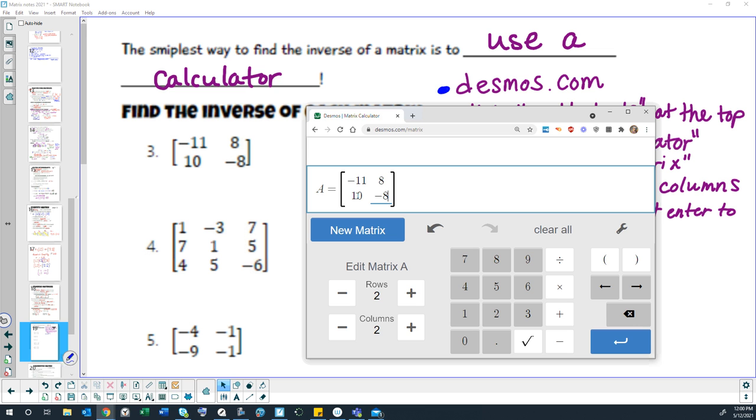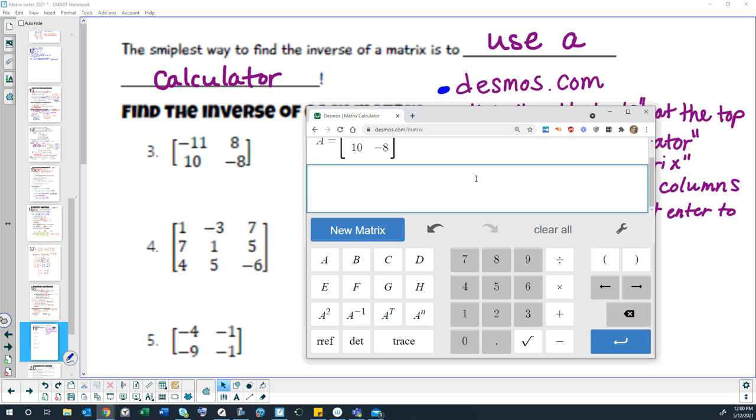One thing I really like about the Desmos matrix calculator is that it doesn't care that I use the minus symbol for negative, whereas a lot of graphing calculators are picky about the difference between the minus button and the negative button, but this one doesn't matter. So all I've accomplished so far is I've basically just told Desmos that this is my matrix that I'm working with, and it's called it matrix A. Now to find the inverse, I'm going to come down here to these buttons and find matrix A and then I find the button that says A to the negative 1.